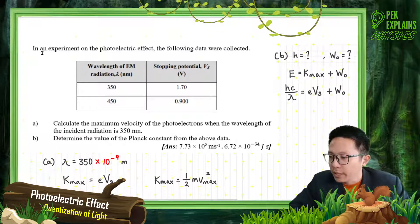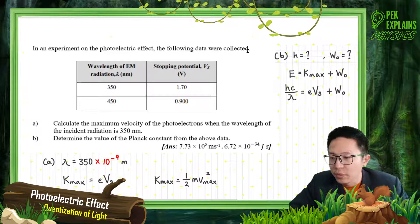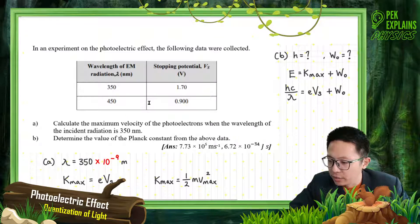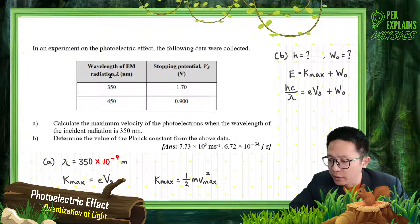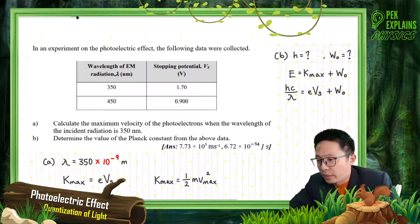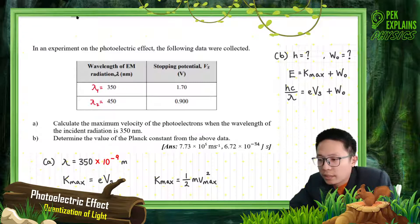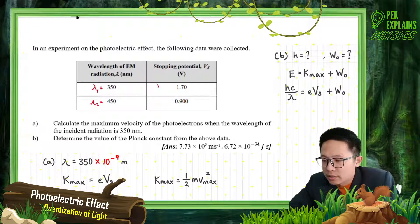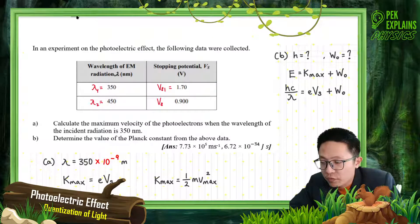In an experiment on the photoelectric effect, the following data were collected. We have two kinds of wavelength: wavelength 1 and wavelength 2. And this is the stopping potential for wavelength 1, and this is the stopping potential for wavelength 2.